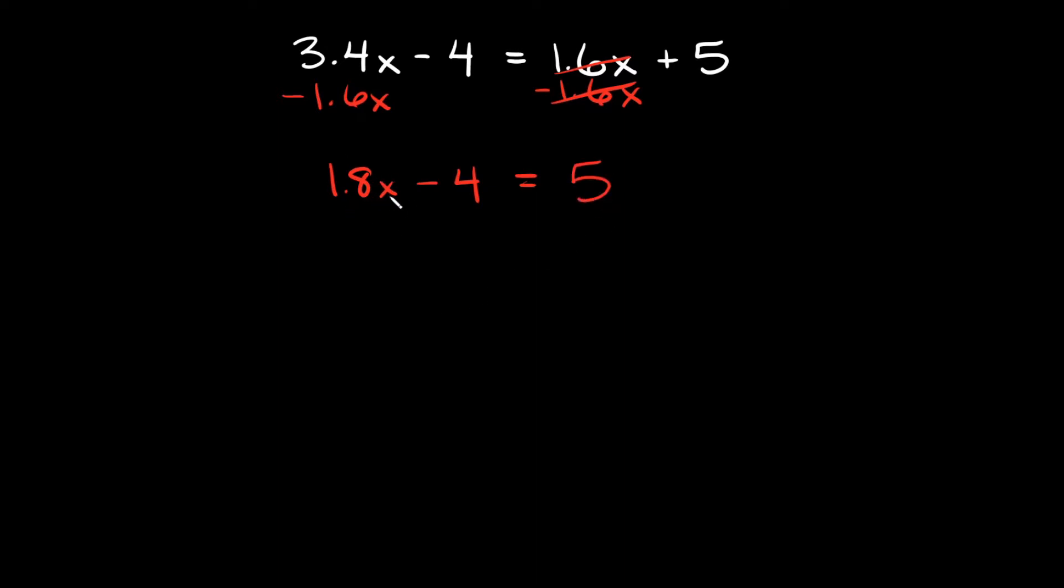So remember we're trying to isolate the x. The next thing we can do is get rid of this minus 4. In order to get rid of that I'm going to add 4. And since I added 4 on this side I need to add 4 on that side.